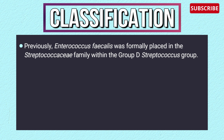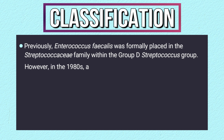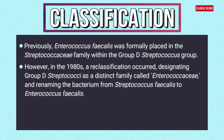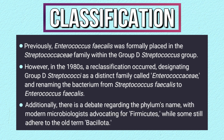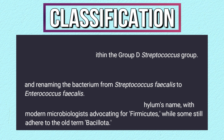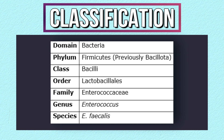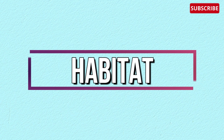Classification of Enterococcus faecalis: previously, it was placed in the Streptococcaceae family within the group D Streptococcus group. However, in the 1980s, a reclassification occurred, designating group D streptococci as a distinct family called Enterococcaceae and renaming the bacterium from Streptococcus faecalis to Enterococcus faecalis. There is also debate regarding the phylum's name, with modern microbiologists advocating for Firmicutes while some still adhere to the old term Bacillota. The full taxonomy: domain Bacteria, phylum Firmicutes, class Bacilli, order Lactobacillales, family Enterococcaceae, genus Enterococcus, species Enterococcus faecalis.